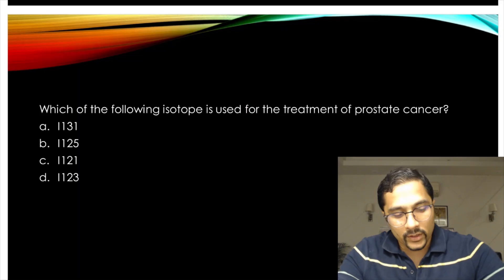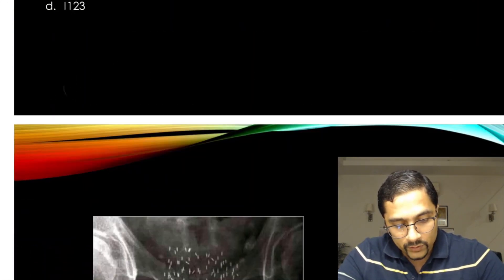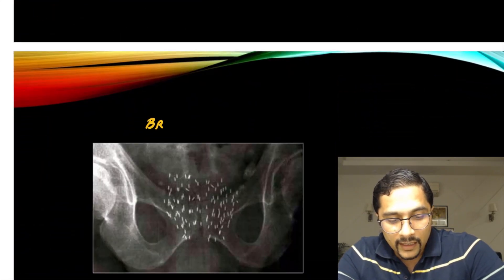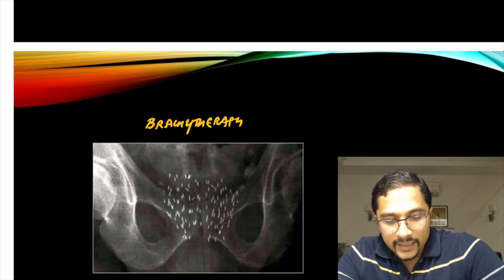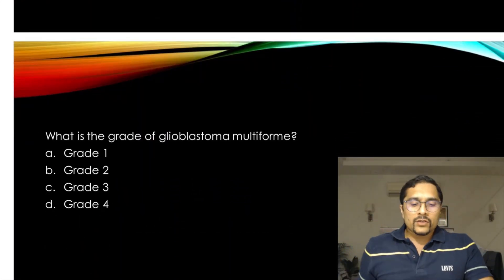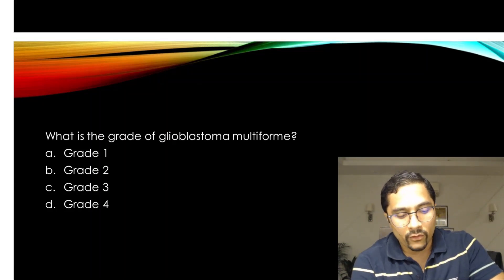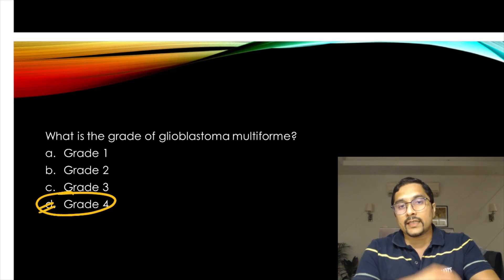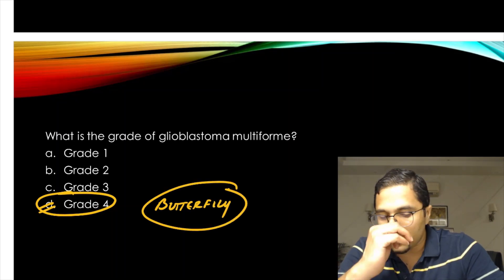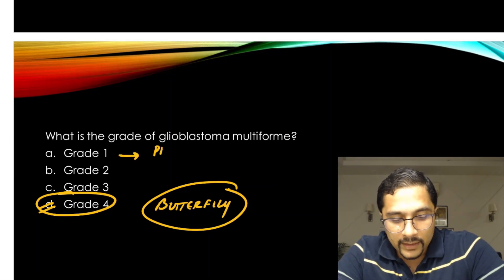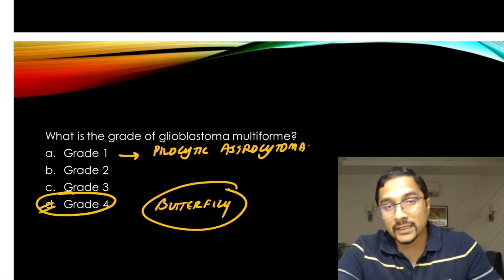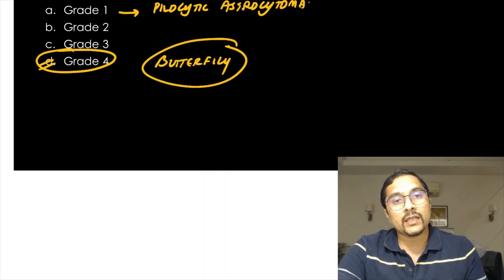Iodine-125 is the isotope used for prostate cancer treatment — these iodine-125 seeds are used for brachytherapy, delivering radiotherapy locally at the prostate site. Grade of glioblastoma multiforme is grade 4 — the most aggressive type, also called butterfly tumor. Grade 1 is pilocytic astrocytoma with the best prognosis; glioblastoma multiforme has the worst prognosis.